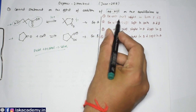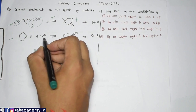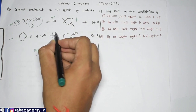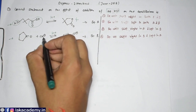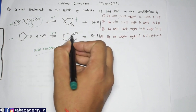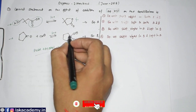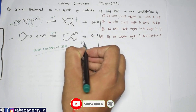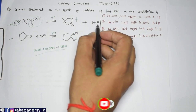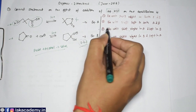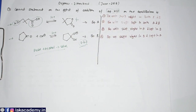Looking at the options, either the third or the first will be correct. If I add H⁺, it will coordinate with the O⁻ and cyanohydrin formation takes place. In both cases the equilibrium shifts to the right-hand side, so the first option is the correct answer.